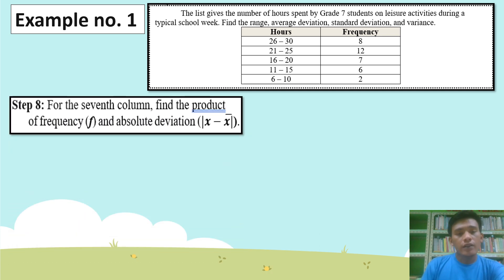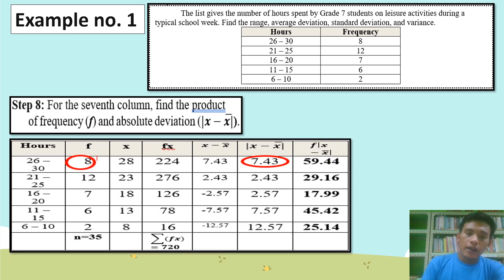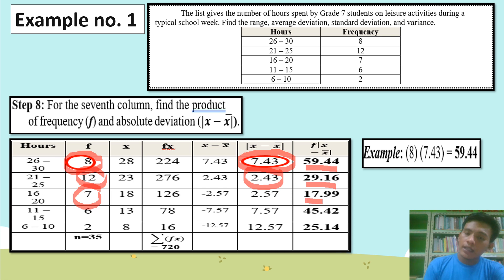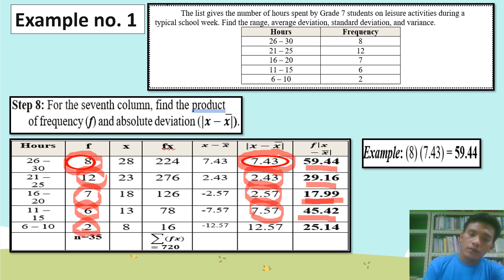Step 8: For the seventh column, find the product of the frequency multiplied by the absolute deviation — F times the absolute value of X minus the mean. So 8 times 7.43 equals 59.44. 12 times 2.43 equals 29.16. 7 times 2.57 equals 17.99. 6 times 7.57 equals 45.42. 2 times 12.57 equals 25.14.